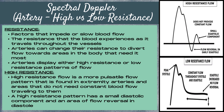First, let's talk high resistance. High resistance flow is a more pulsatile type flow pattern, and it's found in extremity arteries and areas that do not need constant blood flow traveling to them. A high resistance pattern has a small diastolic component and an area of flow reversal in diastole.